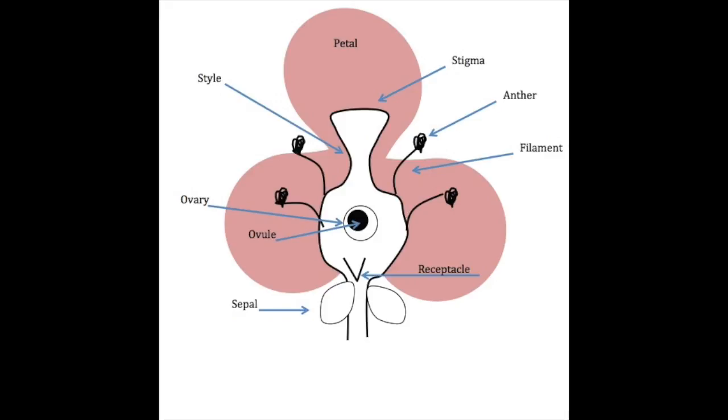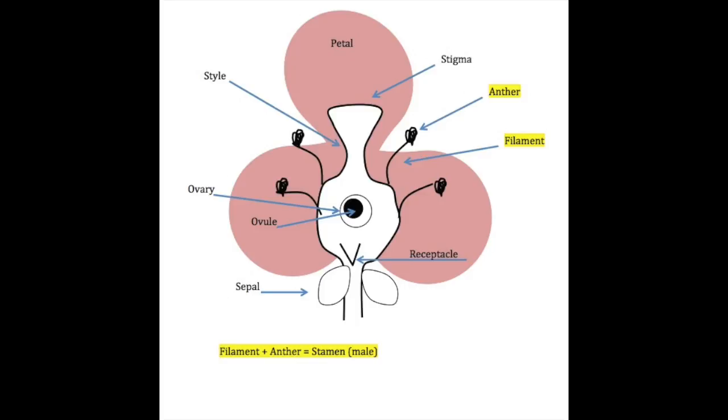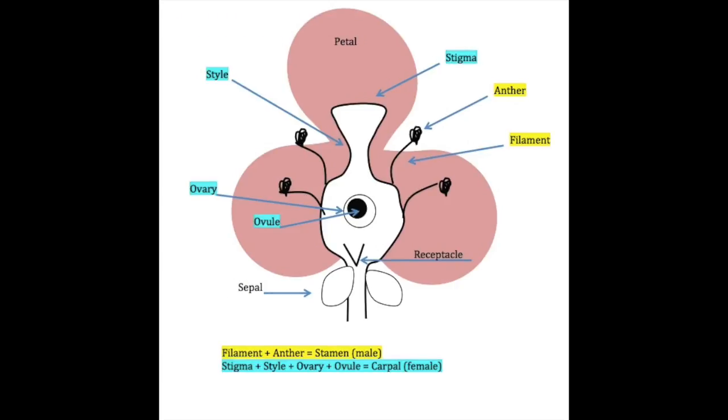It's important to note the male and female parts of the flower. The filament and anther make up the stamen, which is just a name for the male components. The stigma, style, ovary, and ovule make the carpal, the female component. And there's your IB-worthy flower.